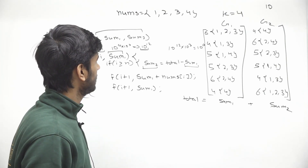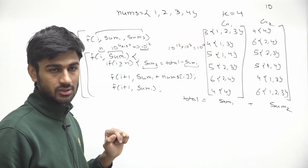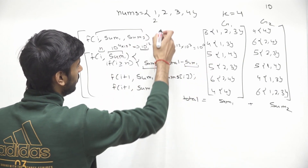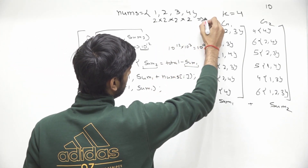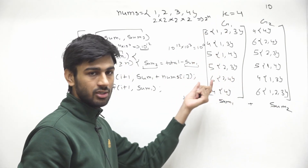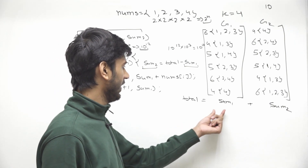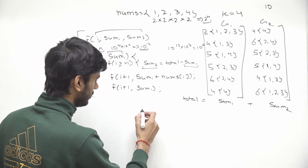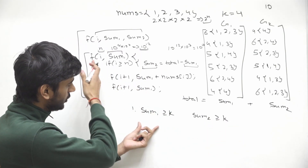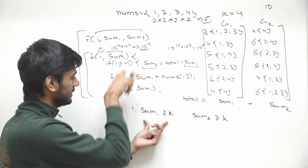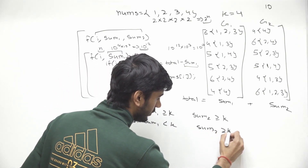Let's count the total number of ways to divide all elements into two groups. For each element we have 2 options, so in total we will have 2^n different ways. Now let's consider the possible cases for sum1 and sum2 given sum1 + sum2 = total. First case: sum1 ≥ k and sum2 ≥ k. Second case: sum1 < k and sum2 ≥ k.